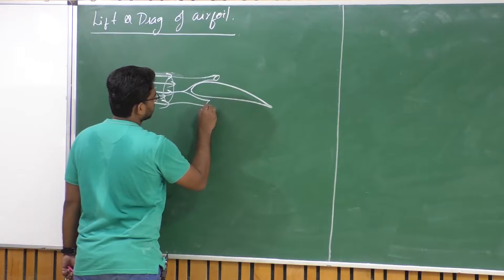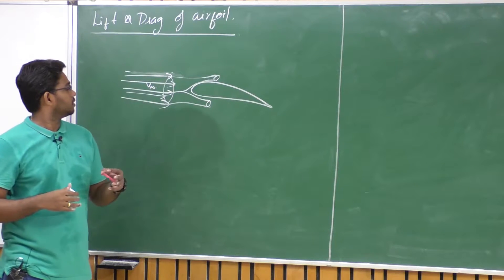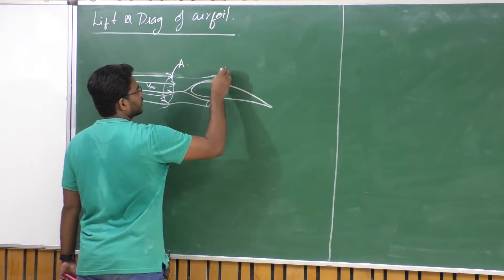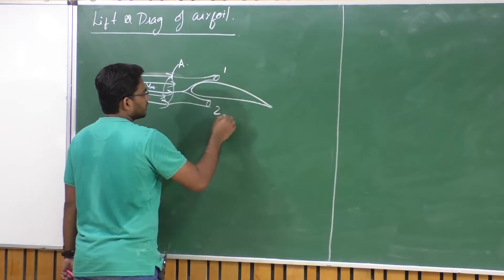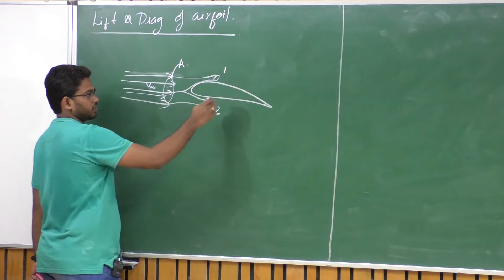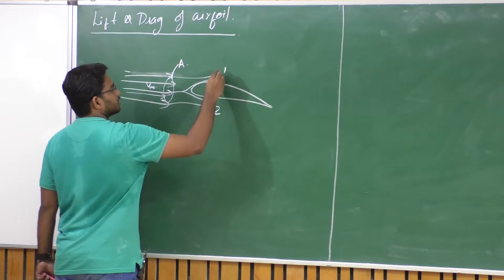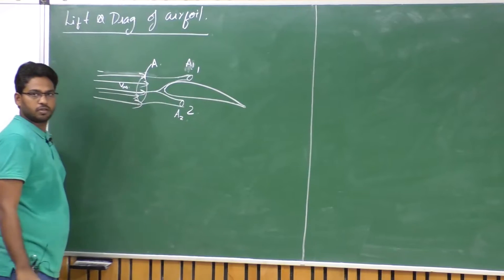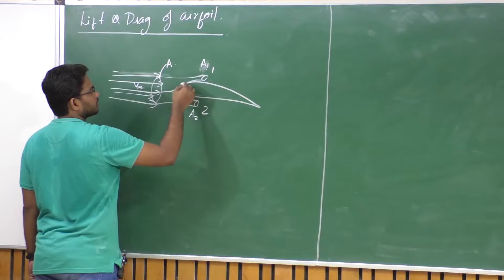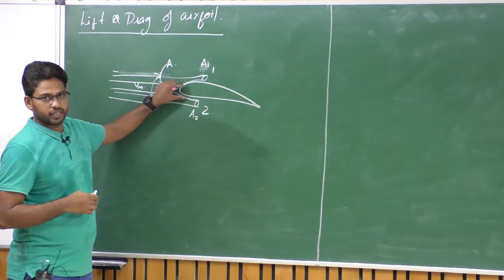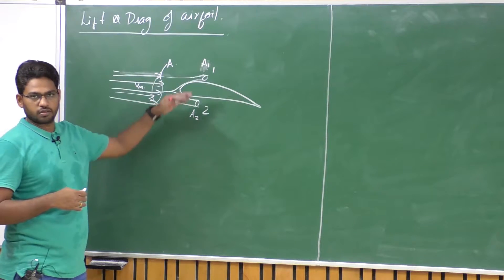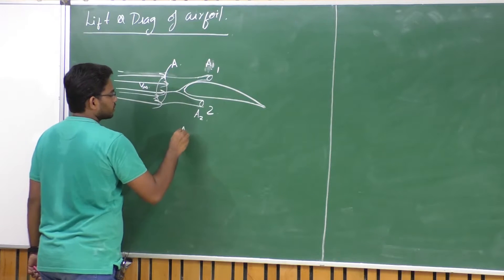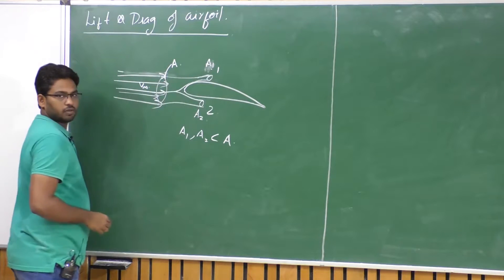There are many other explanations for how lift is generated; this is one I believe is more realistic. Let us say the initial cross-section area of the stream tube is A. Let region 1 be on the top surface and region 2 be on the bottom surface of the airfoil, with corresponding areas A1 and A2. Because of the presence of this body, the flow gets split, resulting in a reduction in cross-sectional area above and below the airfoil — so A1 and A2 are less than the area of the parent stream tube.